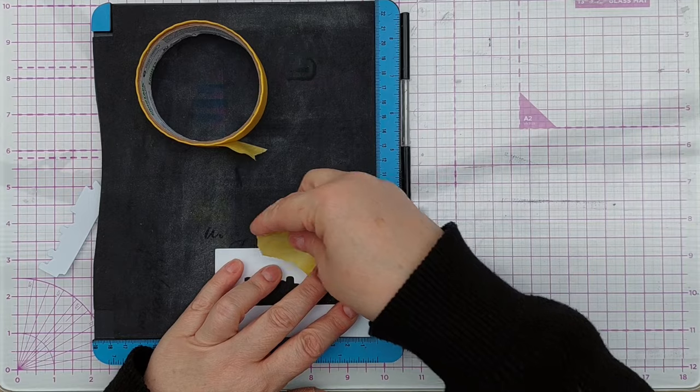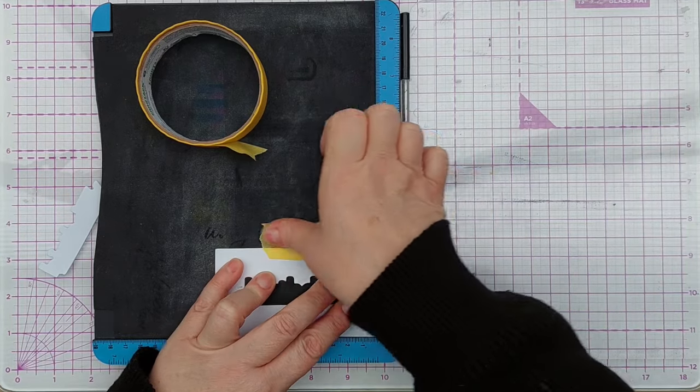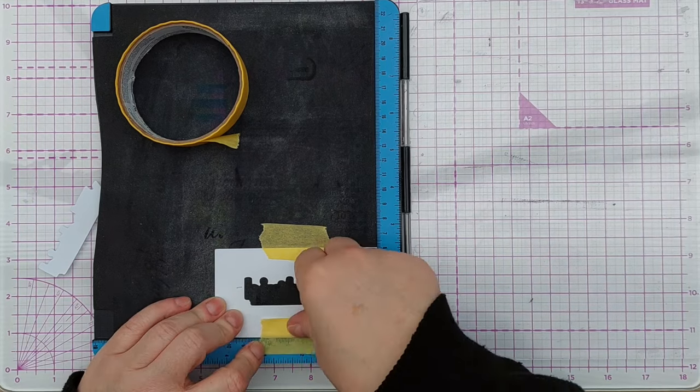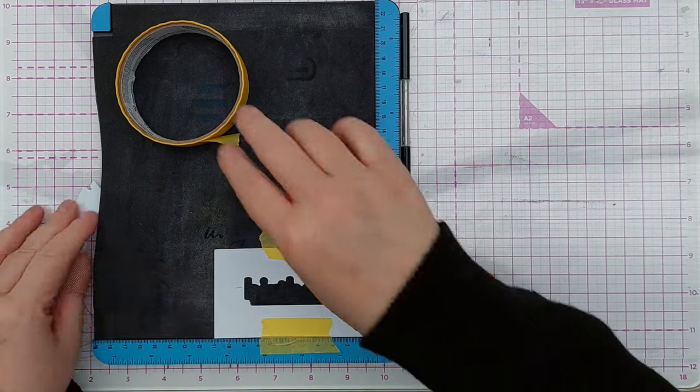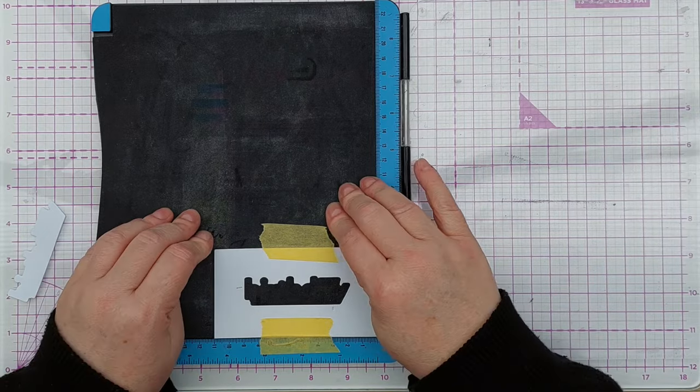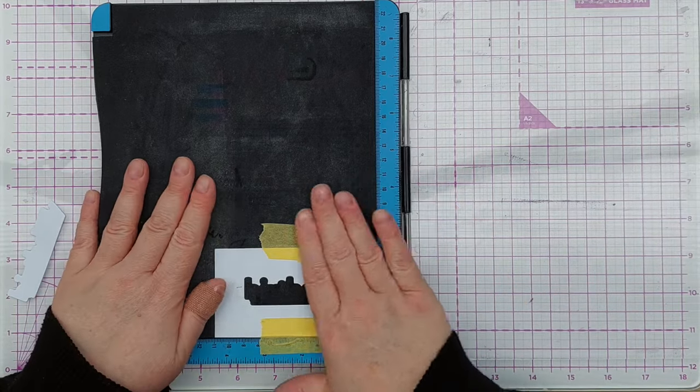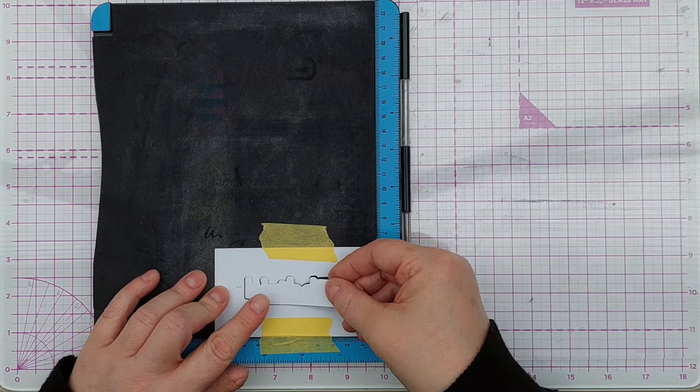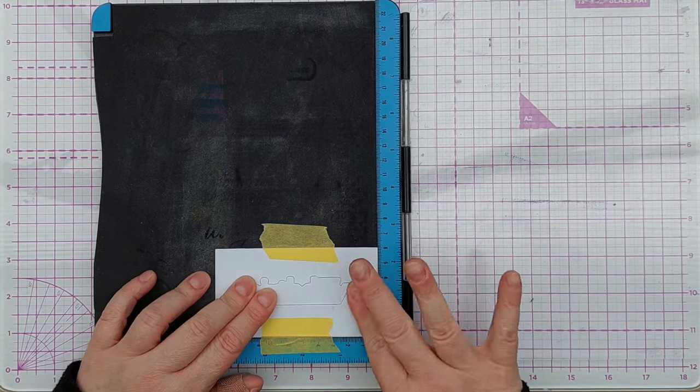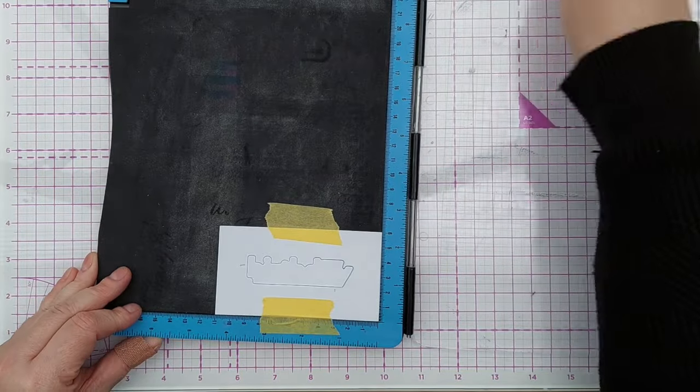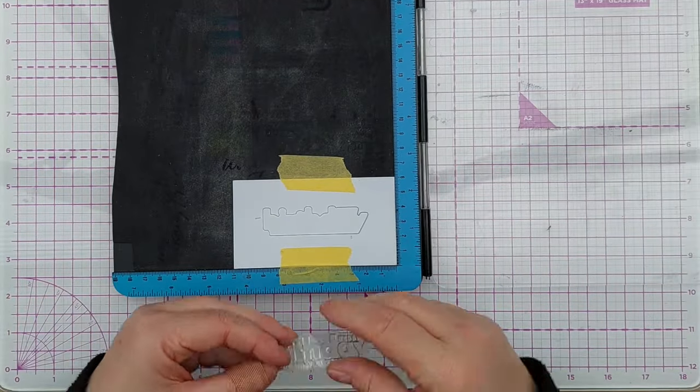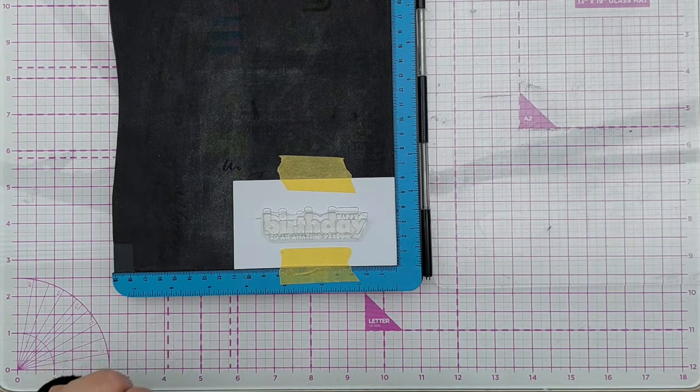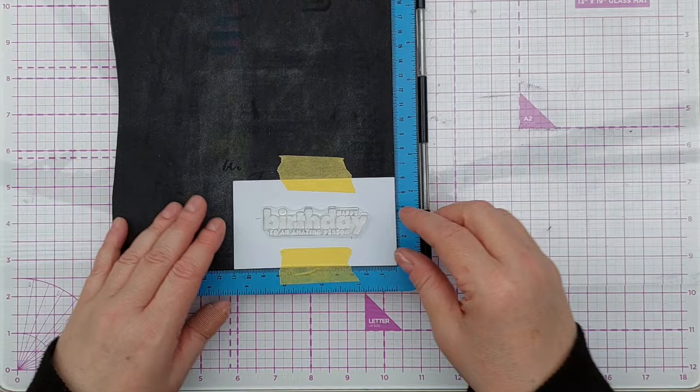So this is the jig part. This is going to hold my die cuts in place while I stamp on them. So a little bit of extra tape on there. If you've got a stamp positioner with a sticky mat or a grip mat in then you won't need the tape probably. Then I'm going to put my die cut back in there and I'm going to take my stamp and put it on there and get it lined up absolutely as best I can.